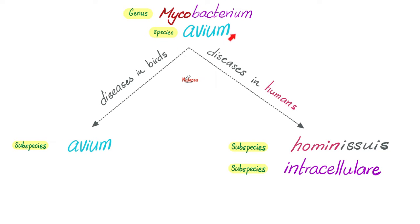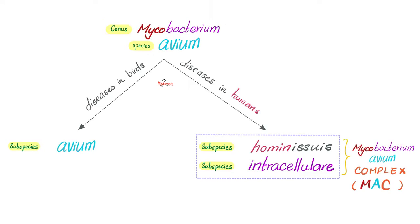First, the nomenclature. Mycobacterium avium — genus: Mycobacterium, species: avium. Some of them cause diseases in birds, and this is called Mycobacterium avium subspecies avium. Since this is a channel about medicine, we care more about the disease in humans — Mycobacterium avium subspecies hominissuis, and Mycobacterium avium subspecies intracellulare. If you lump these two together, you call them Mycobacterium avium complex, because it's more than one organism.